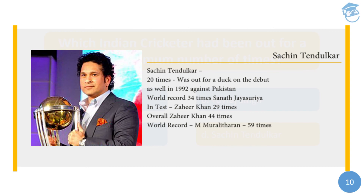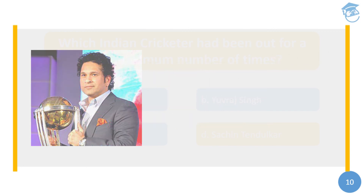In test matches, it's Zaheer Khan who was out 29 times for India. Overall it's also Zaheer Khan who was out for a duck 44 times. The world overall record is held by Muttiah Muralitharan, who was out 59 times for a duck in ODIs and tests combined. Notably, Sachin was out for a duck on his debut in 1992 against Pakistan, but he rose from there to become the all-time best batsman.